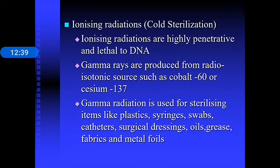Sterilization by ionizing radiation is also known as cold sterilization, as temperatures are kept low and there is no rise in temperature. Ionizing radiations are highly penetrative and lethal to DNA. Gamma rays are produced from radioisotope sources such as cobalt-60 or cesium-137, and are used for sterilizing plastics, syringes, swabs, catheters, surgical dressings, oils, greases, fabrics, and metal foils.